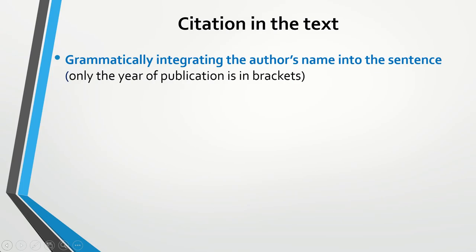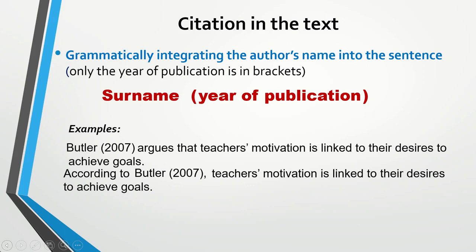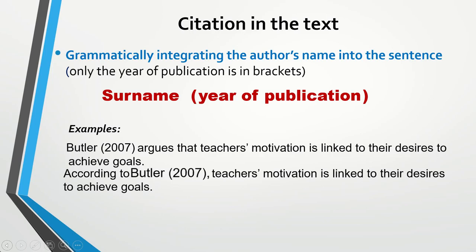Another way of citing sources is grammatically integrating the author's name into the sentence. In this case, we have the author's surname, and a year of publication, but only the year of publication is in brackets. In the first example, I have 'Butler (2007) argues.' Here, only the year of publication is in brackets because the author's name Butler is grammatically integrated into the sentence — it is the subject of the sentence. In the second example, I have 'according to Butler (2007).' Again, the author's name is grammatically integrated, which is why only the year of publication is in brackets.